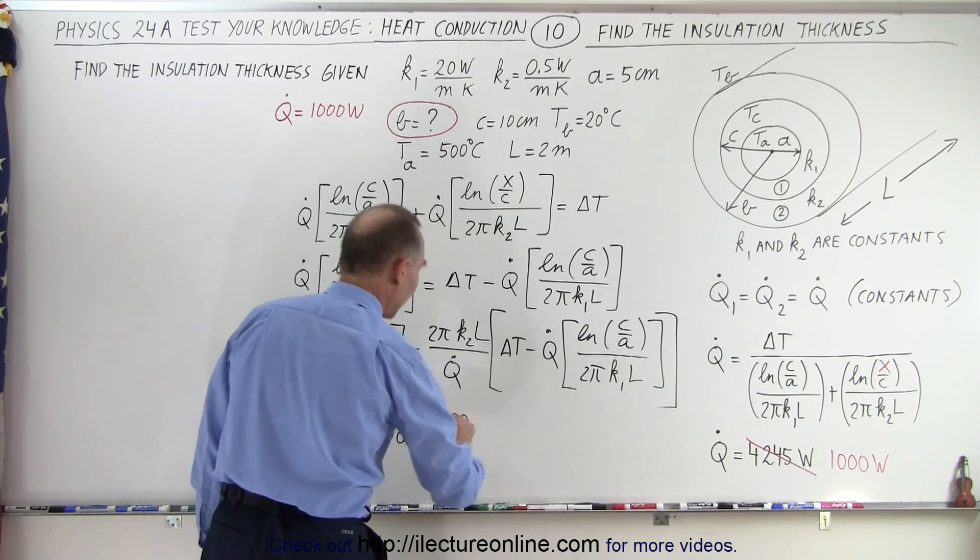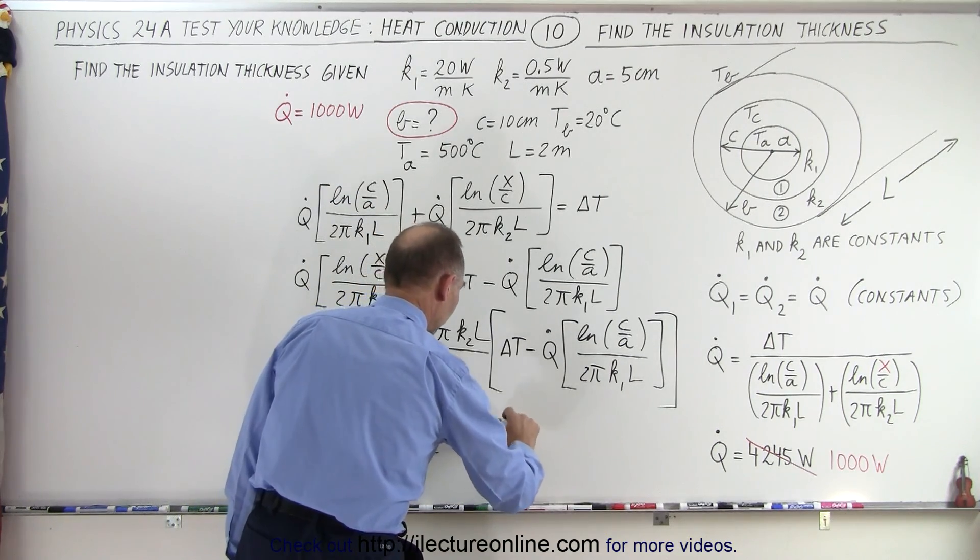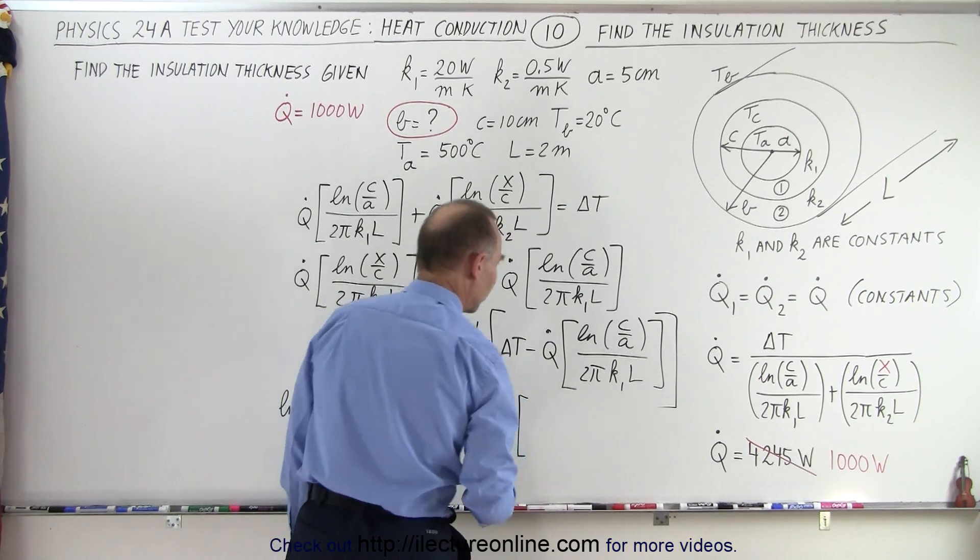Times delta t, that would be 480, 500 minus 20, minus a thousand, times the natural log of x over c.